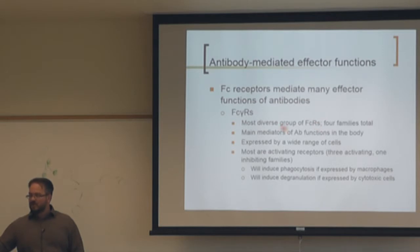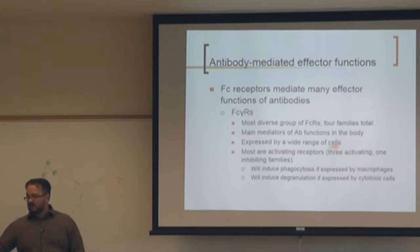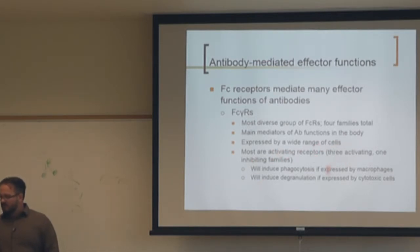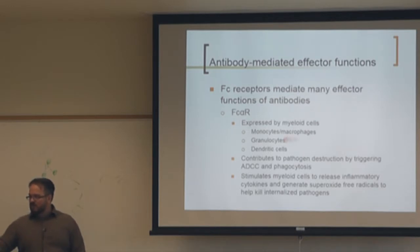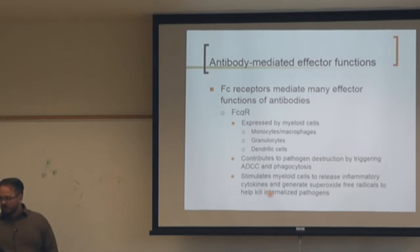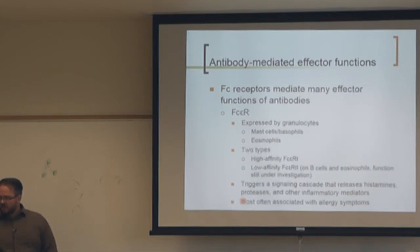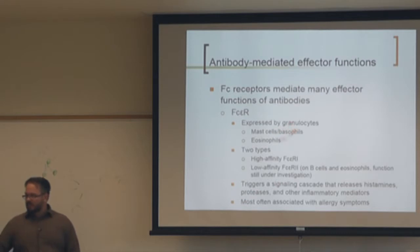FC gamma receptors are the most diverse group — FC gamma 1, 2 (inhibitory), 3, and 4 — and are the main mediators of antibody functions in the body, expressed on a wide range of cells. Most are activating except the one inhibitory receptor. FC alpha receptors are expressed by myeloid cells and contribute to ADCC, phagocytosis, and inflammatory cytokine release. FC epsilon receptors on basophils and eosinophils cause degranulation.